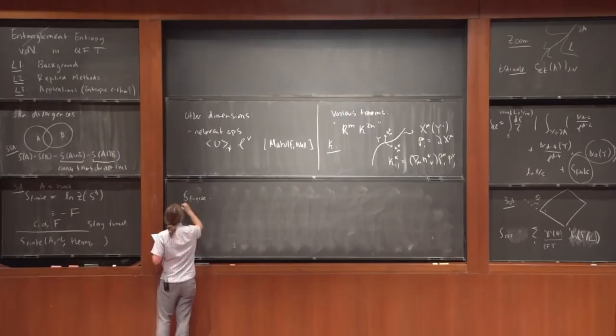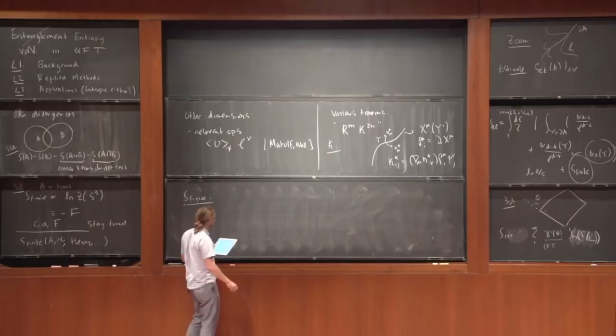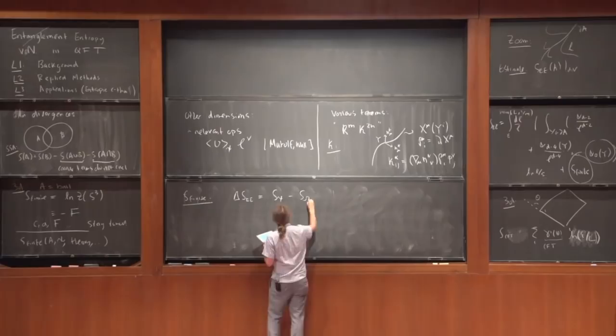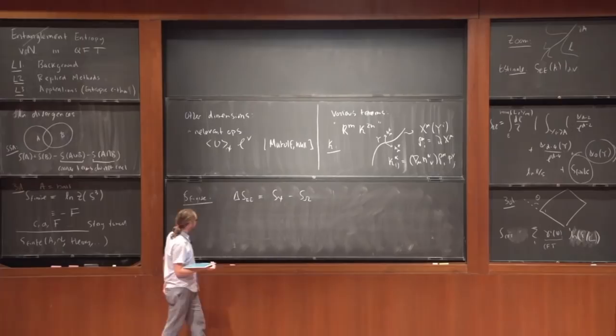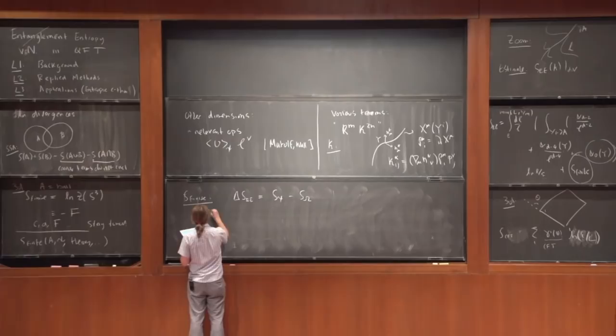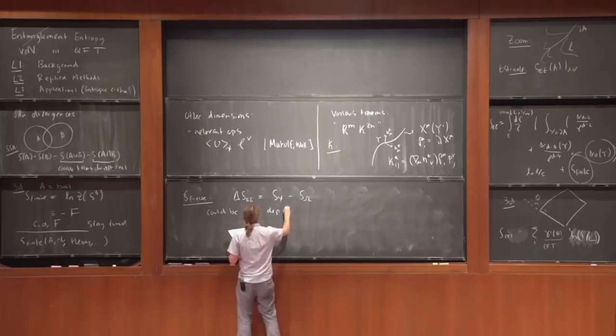How do we extract something from S-finite? There are a few ways. One way is to compute the change in entanglement entropy between two different states: S(psi) minus S(vacuum). This sometimes is fine, but you have the issue that there are sometimes state-dependent divergences that don't cancel here. These don't often arise, but sometimes they do.